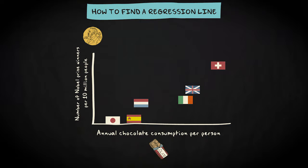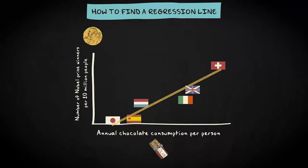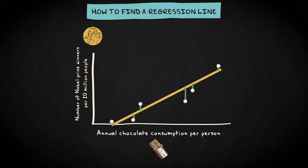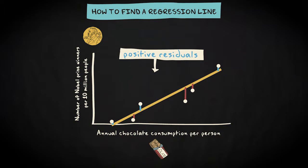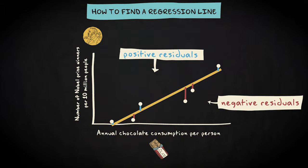Next, you measure for every possible line the distance from the line to every case — so in this case, to every flag in the scatterplot. For example, based on a random line, you measure the vertical distance between Japan and the line, the distance between Spain and the line, and so on, until you know the distance to the line of every case in your study. Every distance is called a residual, and you end up with positive residuals — the distances from cases above the line, displayed in blue — and negative residuals, distances from cases below the line, displayed in red.